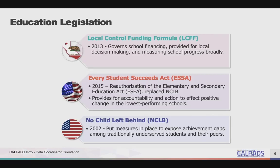The Every Student Succeeds Act, or ESSA, is federal legislation enacted in 2015. It reauthorized the Elementary and Secondary Education Act and provided for accountability and action to affect positive change in the lowest performing schools. No Child Left Behind, NCLB, enacted in 2002, put measures in place to expose achievement gaps among traditionally underserved students and their peers. NCLB was replaced by ESSA.